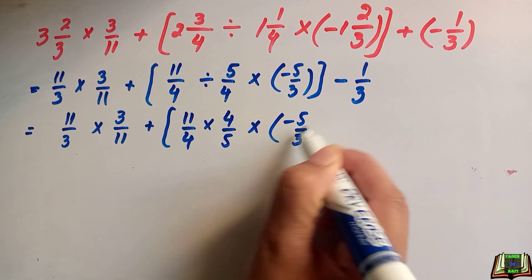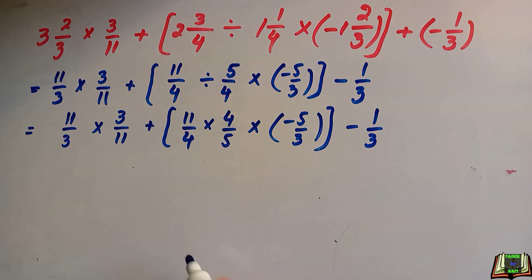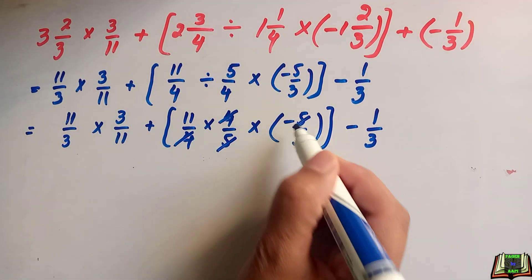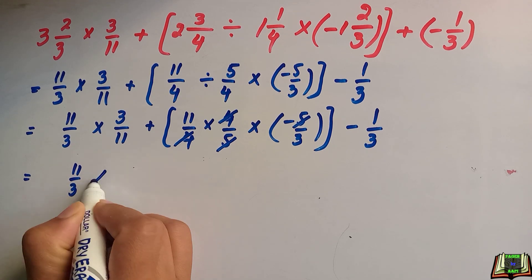Now this 4 and this 4 will be cancelled out. 5 and 5 will be cancelled out. 11 over 3 multiply by 3 over 11, and we are left with a few values: minus 11 over 3 [square bracket close] minus 1 over 3.